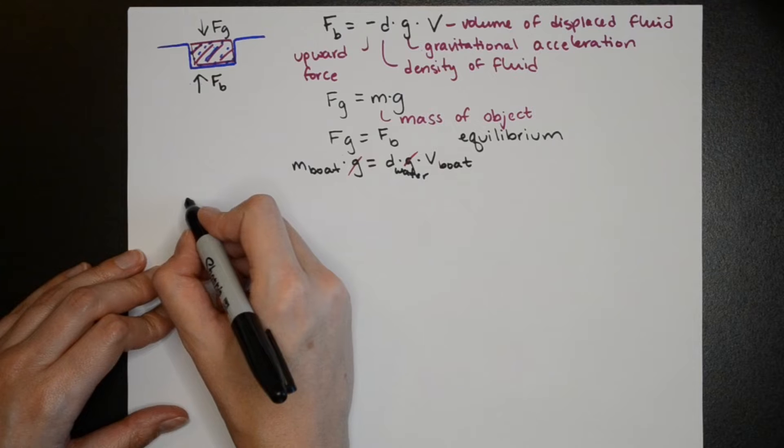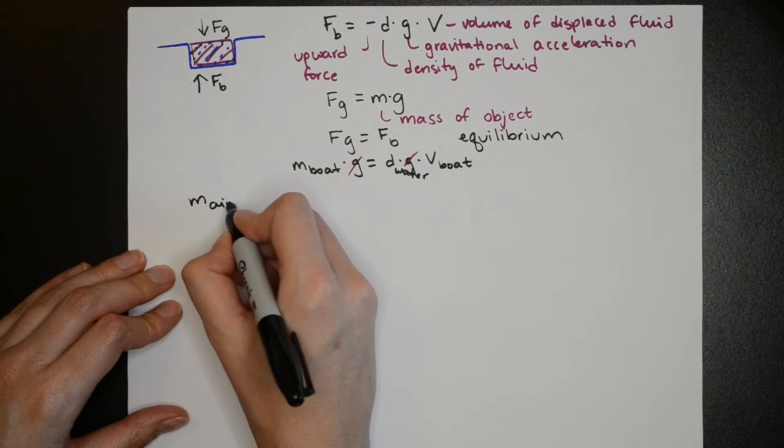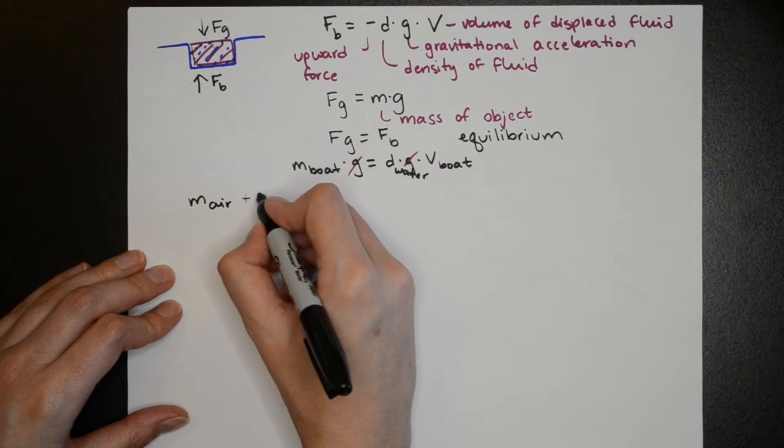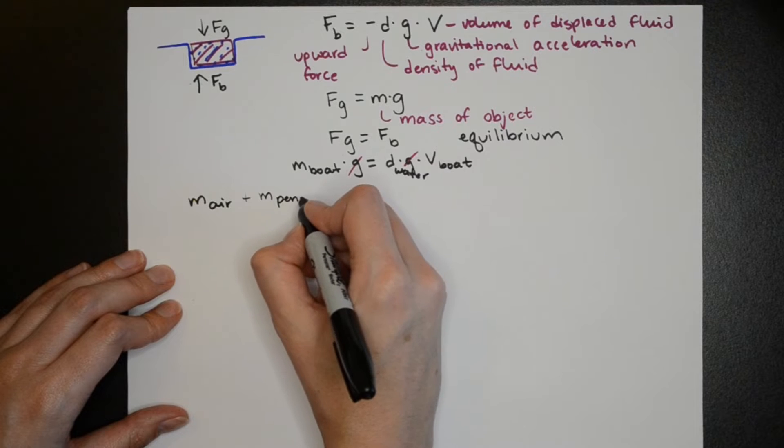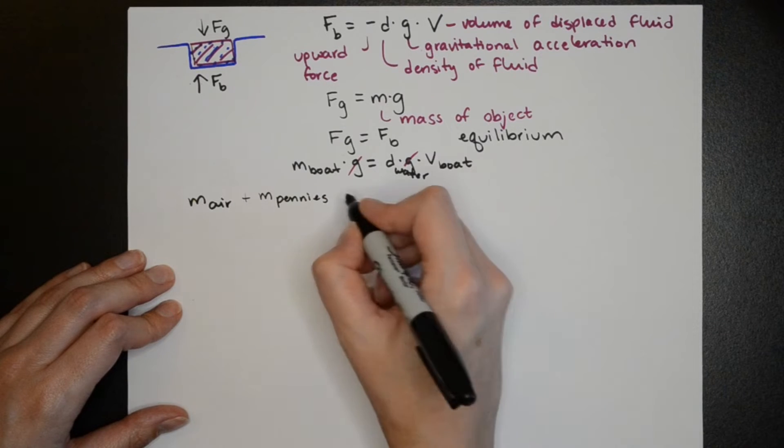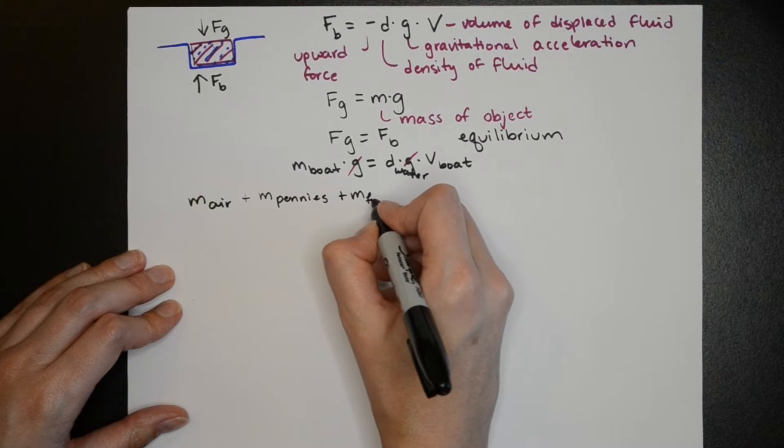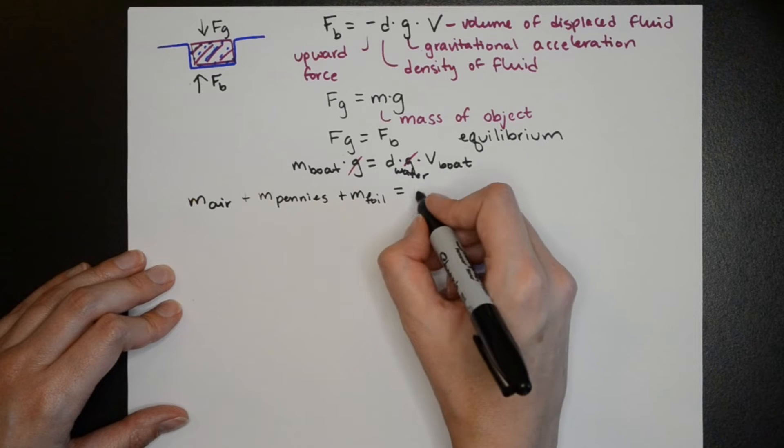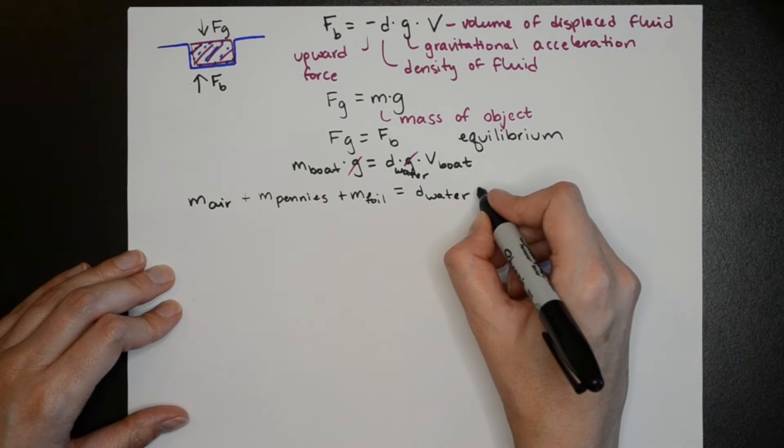Then we can redefine the mass of the boat as the mass of its components. So this will be the mass of air in the boat plus the mass of all the pennies plus the mass of the foil. The right hand side of the equation will remain the same.